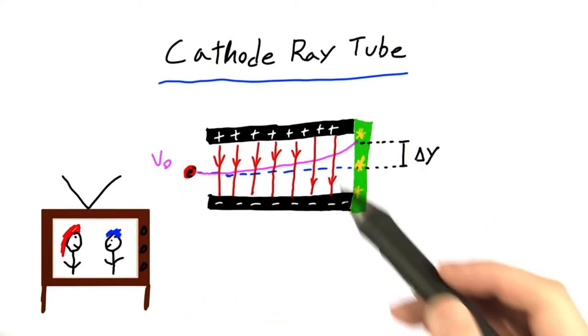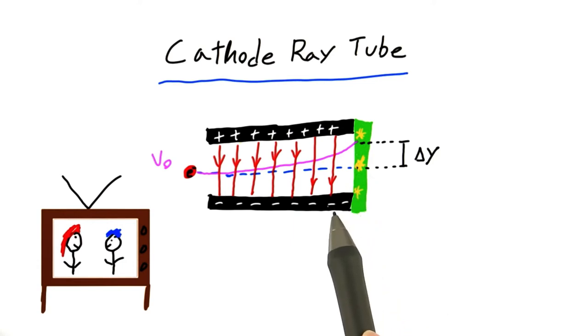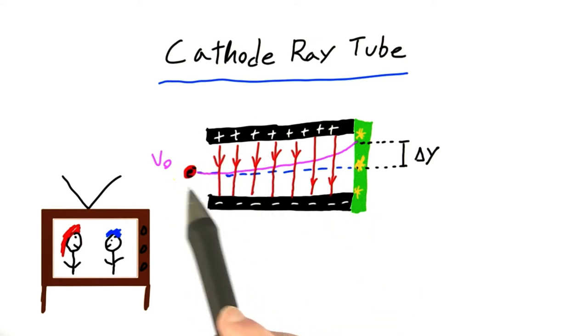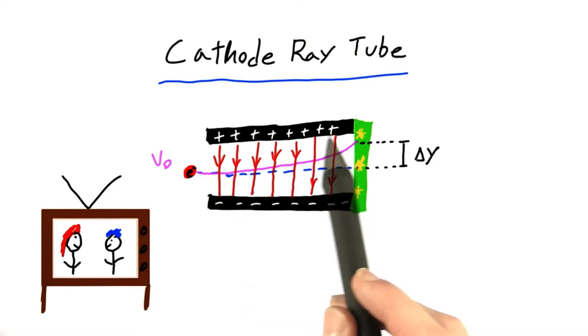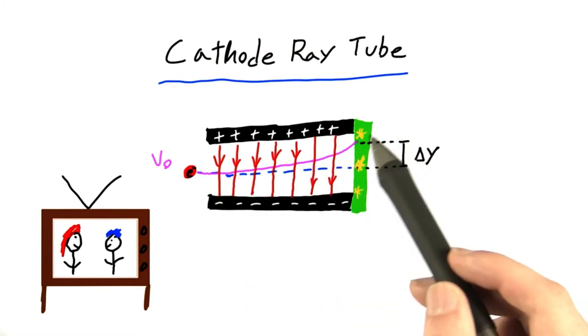Well, one easy way is with an electric field. And we saw in the previous two questions that a great way to produce a nice constant electric field is to have two parallel plates, like these two. So when this negatively charged electron moves into this electric field, it'll get pulled towards the positive plate, directing it to this part of the screen.